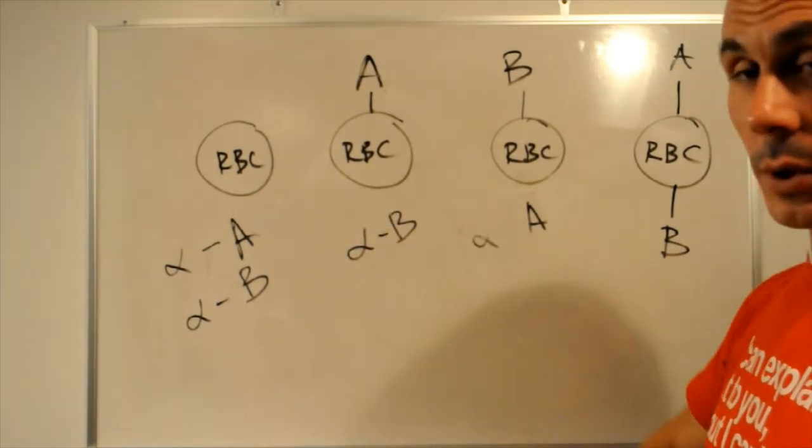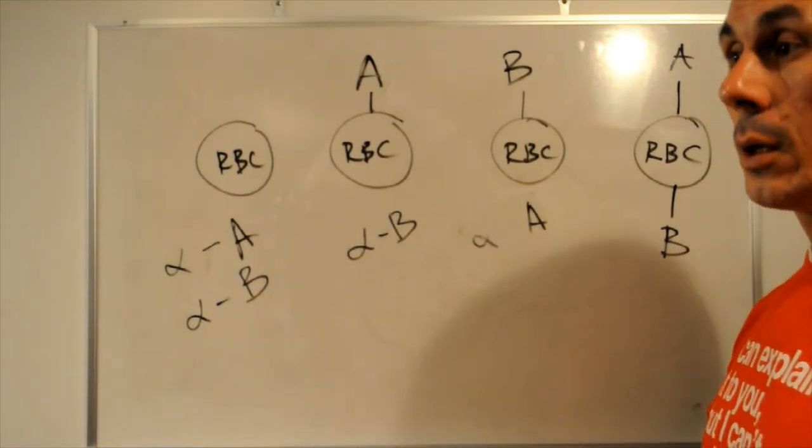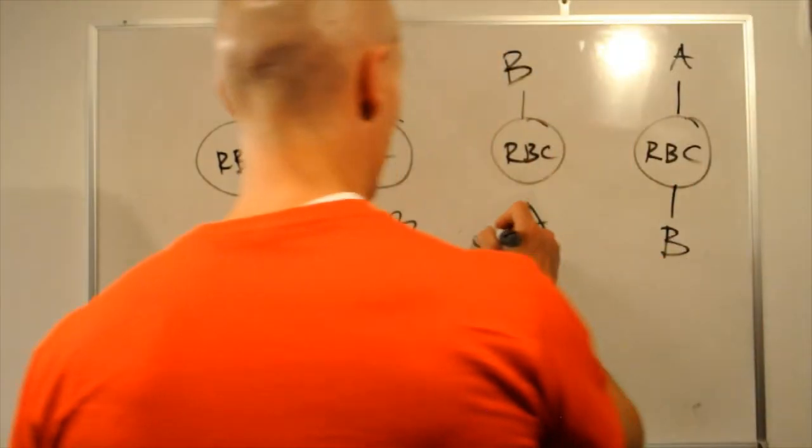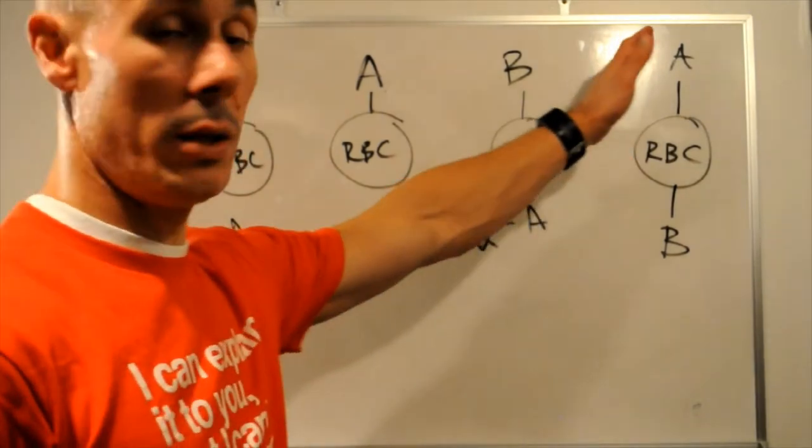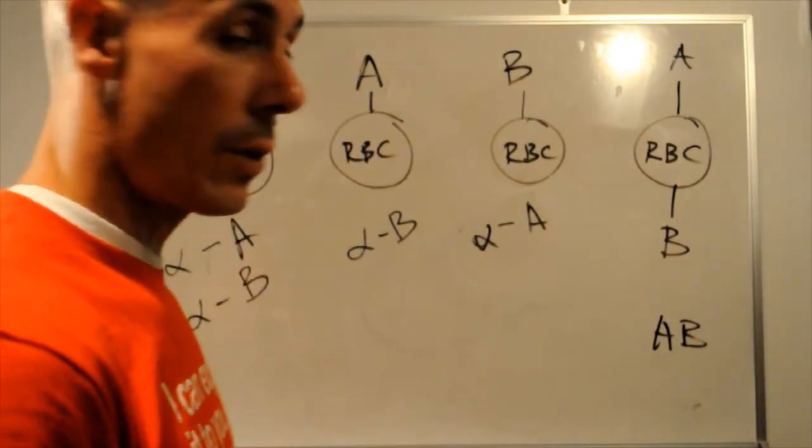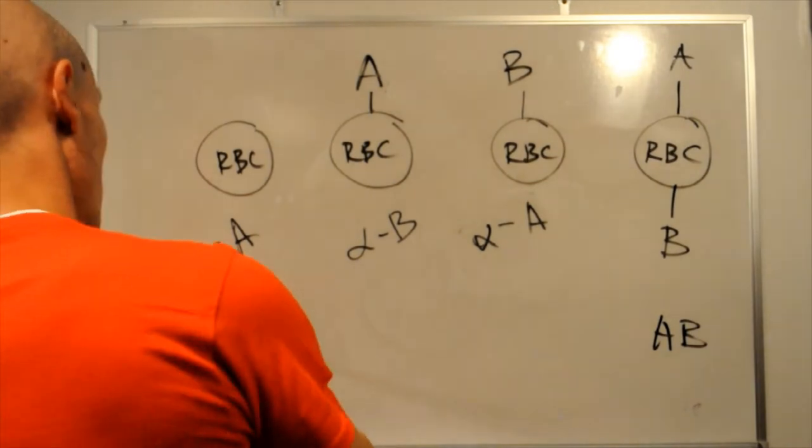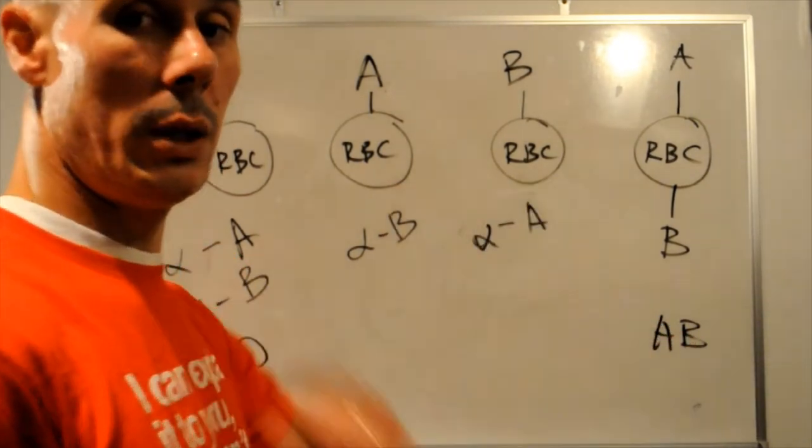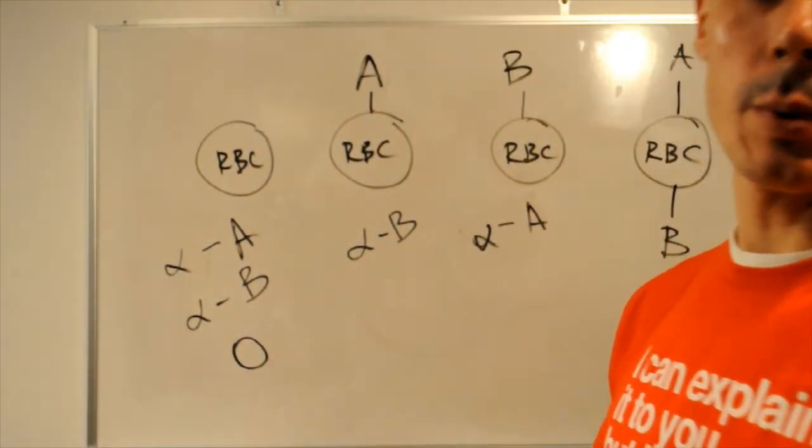So, this is the universal donor. Now, the person who can receive any blood type should be a person without antibodies, meaning that this group, AB, is the universal recipient. So, again, O is the universal donor, AB is the universal recipient.